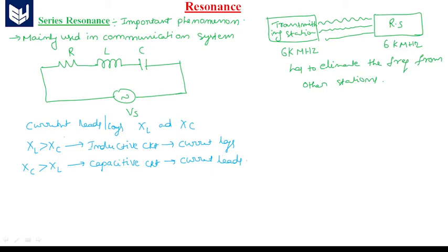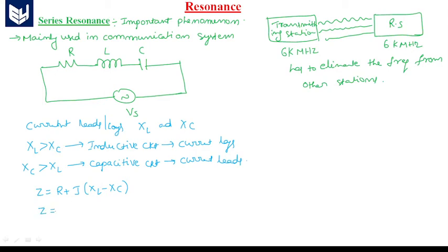For this circuit, impedance Z will be: Z is equal to R plus j times (XL minus XC), where XL is equal to omega L and XC is equal to 1 by omega C. This is the impedance of the series circuit. If V is the source voltage Vs flowing through the circuit, then I is equal to Vs by Z.